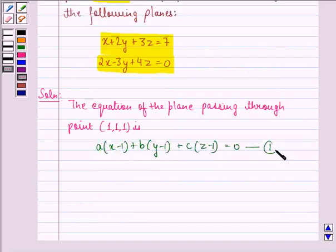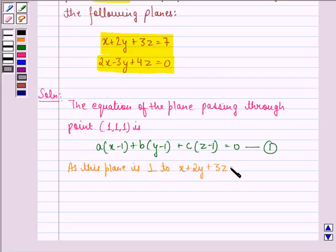We call this the first equation. As this plane is perpendicular to x + 2y + 3z = 7, therefore a + 2b + 3c = 0. This we call equation 2.